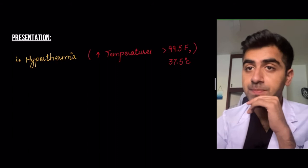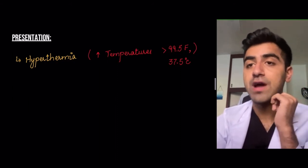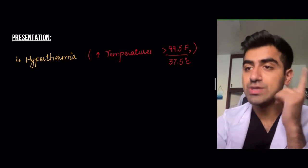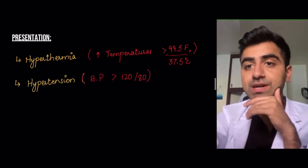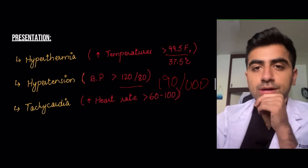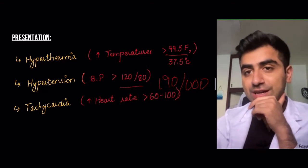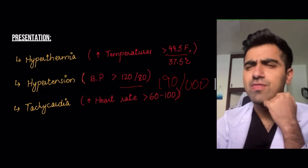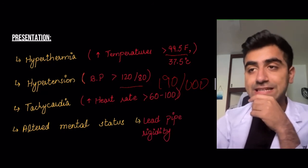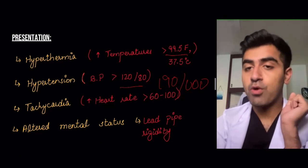What's the presentation of neuroleptic malignant syndrome, and let's see if all of these match our case. Hyperthermia — was that patient hyperthermic? Yes, she had a temperature of 105 degrees Fahrenheit; temperatures greater than 99.5 qualify as hyperthermic. Hypertension — BP greater than 120 by 80; she had 190 by 100. Tachycardia — heart rate above 100; she had a heart rate of 130.